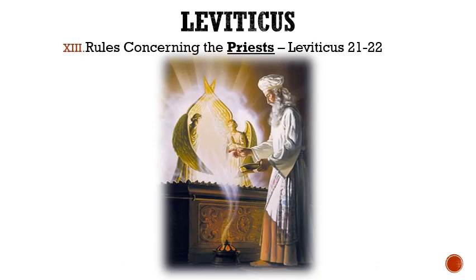Roman numeral 13: Rules concerning the priests are given. First, they were not allowed to touch a dead body unless it was their near kin. Secondly, they were not allowed to shave their heads or the corner of their beard nor cut their flesh. Thirdly, they were not allowed to marry a prostitute or a divorced woman. Fourth, if a priest's daughter became a prostitute, she was to be killed by fire. Fifth, the high priest must always have his head covered and was required to marry a virgin. And finally, a priest that had a blemish — whether it was him being blind, lame, having a flat nose, a broken foot, a crooked back, or dwarfism — was not allowed to offer any type of sacrifice.